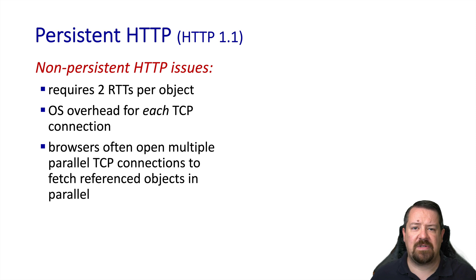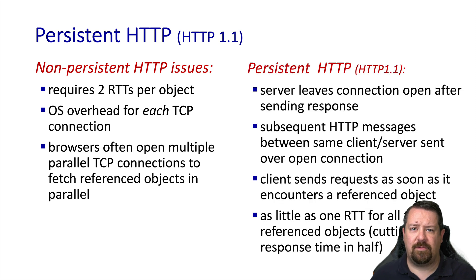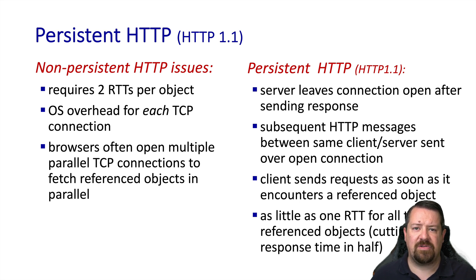With persistent HTTP, which was specified in the 1.1 version of the standard, the server leaves the connection open even after it sends the message back to the client. This means that the client can make a subsequent request over that same connection without having to wait the round trip time to open a new HTTP connection. As the client is parsing the base HTML file, it sends requests for additional objects one after another. This means only half the total number of round trip times are required for subsequent objects, assuming these objects are fairly small.